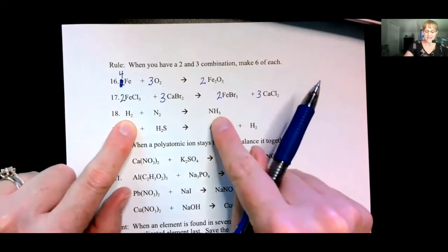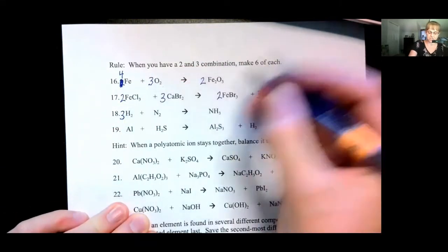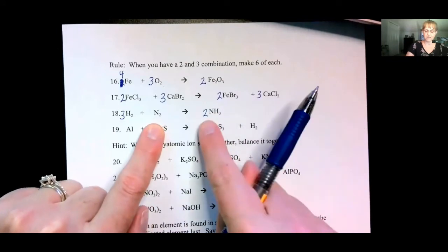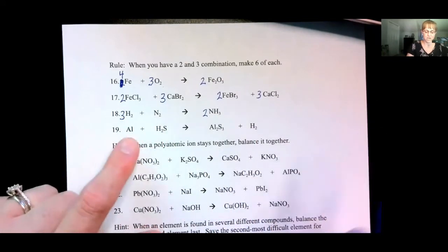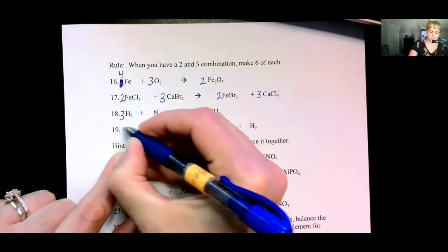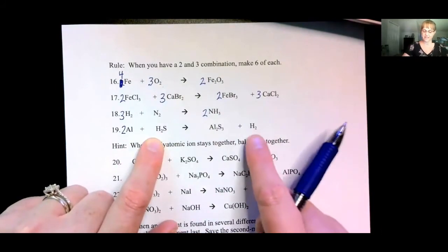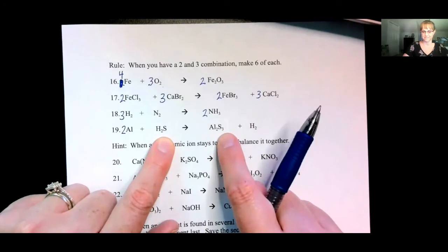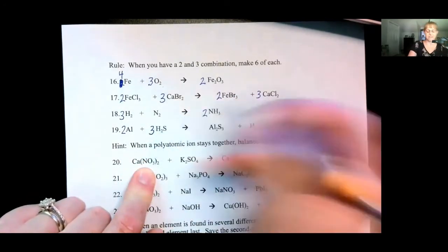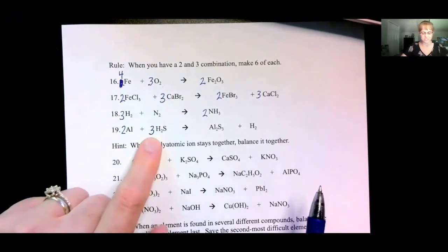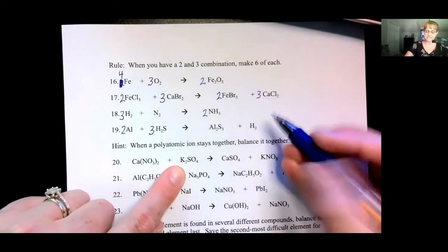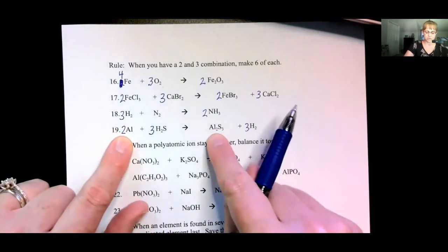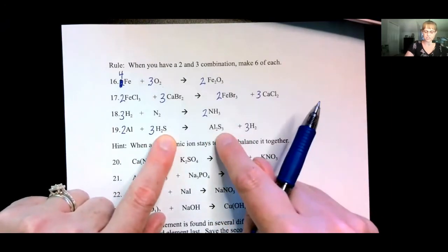We have two hydrogens and three hydrogens — anytime that happens, three times two and two times three. Next, balance the nitrogens — we have two, and it already fixed itself. You have one aluminum and two aluminums — we must balance the aluminums. We have two hydrogens and two hydrogens. We have one sulfur and three sulfurs — three times one gives you three sulfurs on each side. We just messed up the hydrogens: three times two is six, and three times two is six. Check: two aluminums, two aluminums; six hydrogens, six hydrogens; three sulfurs, three sulfurs. We're done.